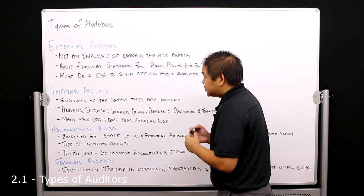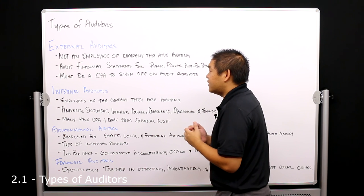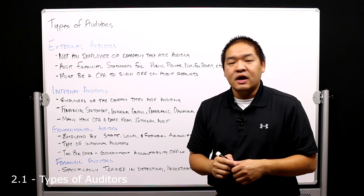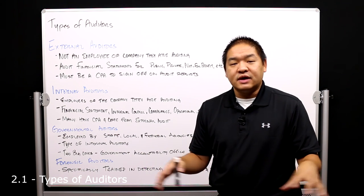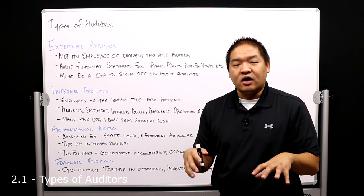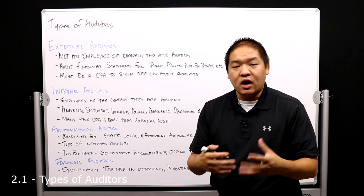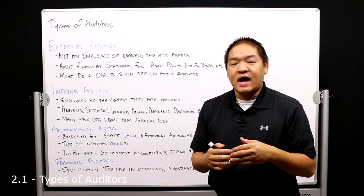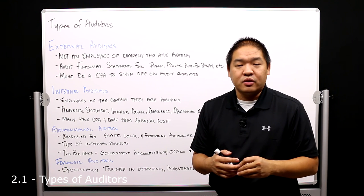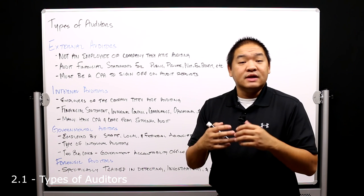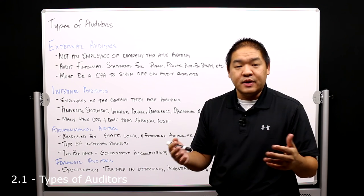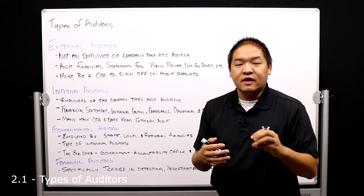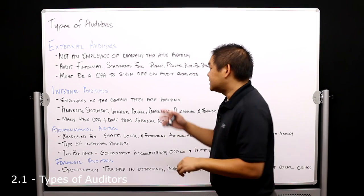Now a key thing about external auditors: the external auditor that actually signs off on the audit report must be a CPA. So the subordinates that are underneath that CPA that are doing the work or doing the audit don't necessarily have to be a CPA, but the person that actually signs off on the audit report—saying that we're going to issue an unqualified opinion or qualified, except for, or adverse opinion—whoever signs off on that actual audit must be a CPA.